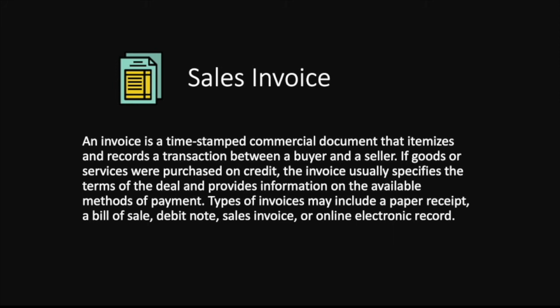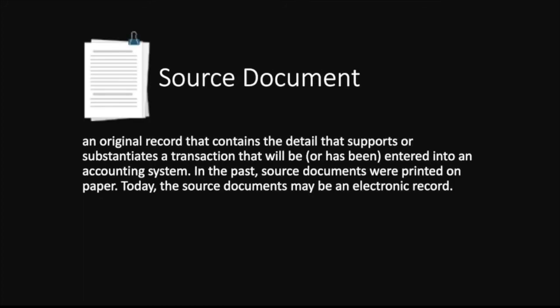A sales invoice is a timestamped commercial document that itemizes and records a transaction between a buyer and a seller. If goods or services were purchased on credit, the invoice specifies the terms of the deal and available payment methods. Types of invoices include paper receipts, bills of sale, debit notes, sales invoices, or electronic records. If you deliver goods, you issue an invoice to your customer, or a billing statement if you're a service company.